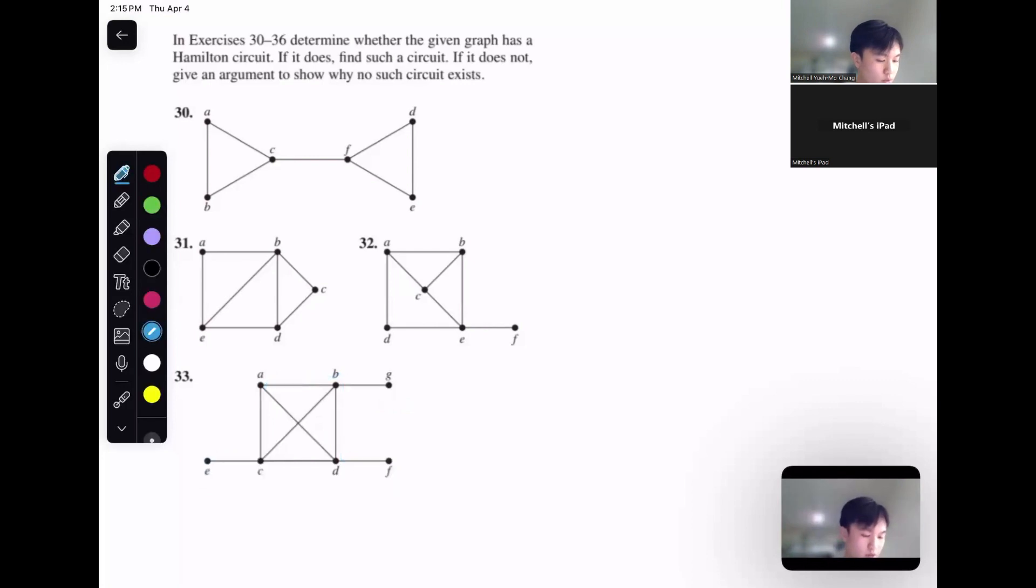And similarly, even if we were to start at a instead, once we go here, we won't have anywhere else to go. Remember that you can technically traverse this edge again, but going back to c means you visit the node c again. So that doesn't exactly work either.